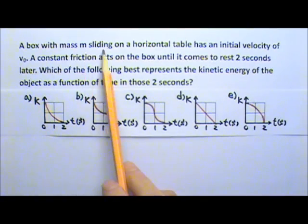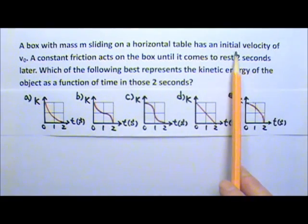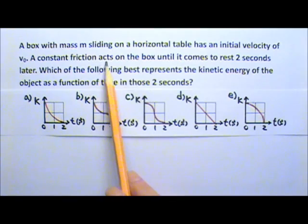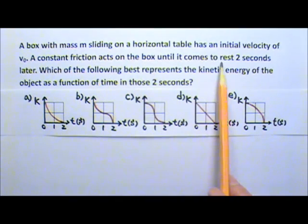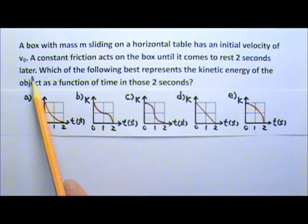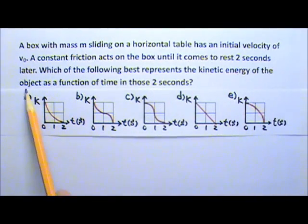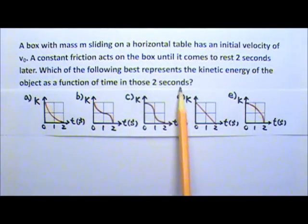A box with mass m sliding on a horizontal table has an initial velocity of v₀. A constant friction acts on the box until it comes to rest two seconds later. Which of the following best represents the kinetic energy of the object as a function of time in those two seconds?